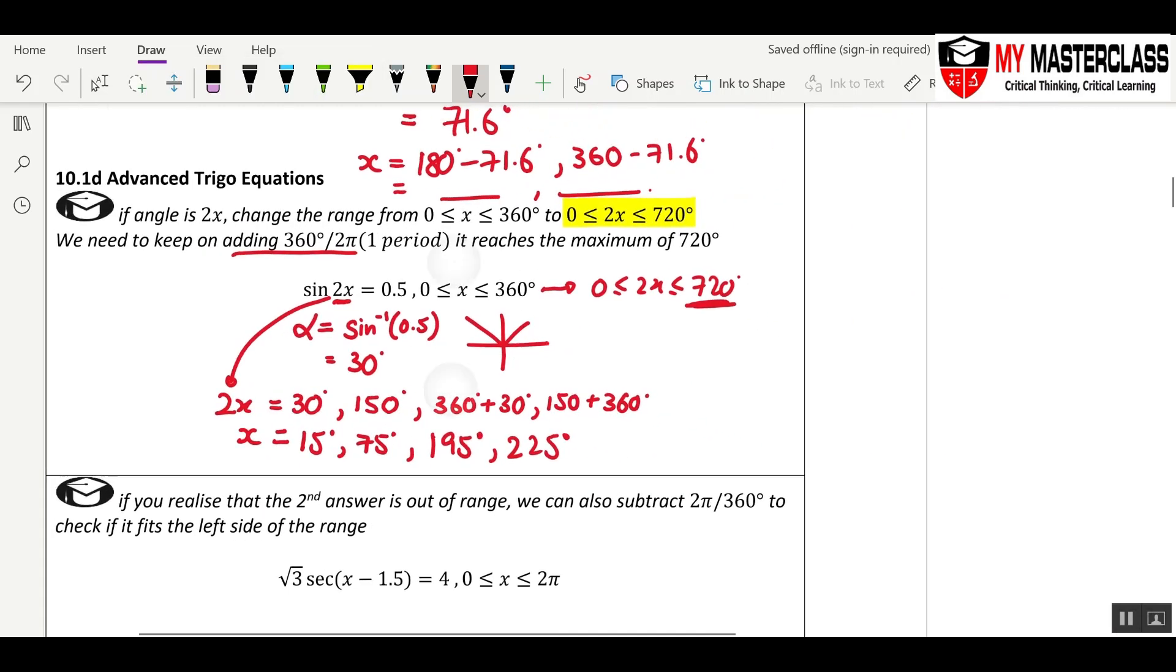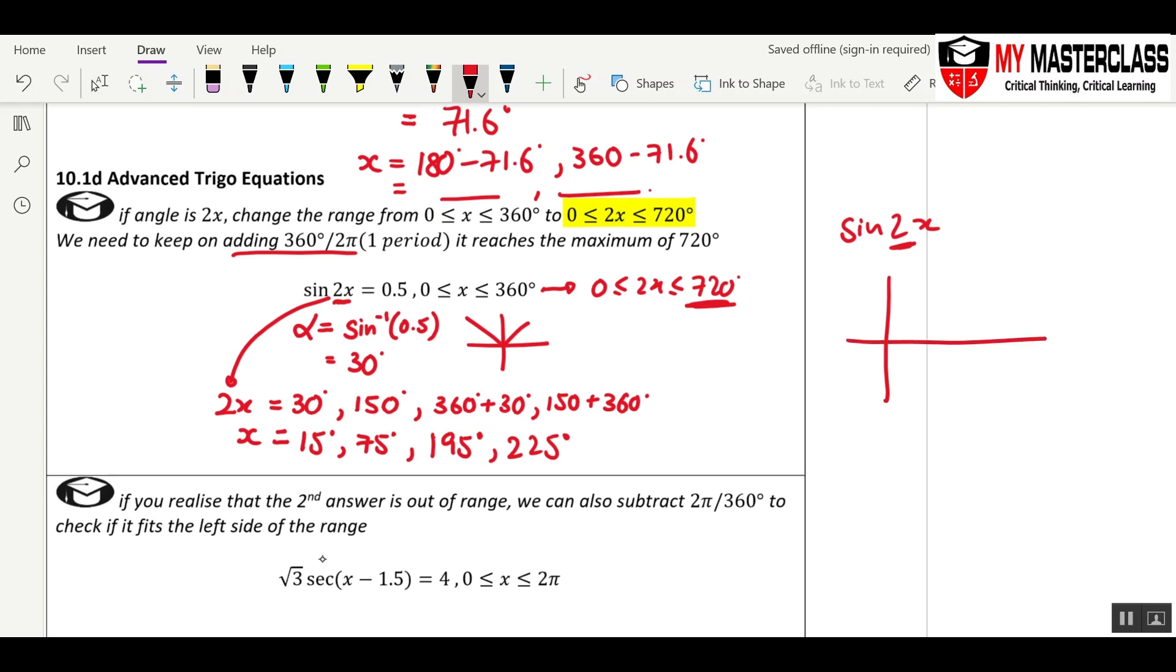If you want to understand the graphical representation, that's because when we draw sine 2x—if you know your graph very well—this means that there is going to be 2 cycles. One cycle is 180, two cycles in 360. If you draw a line here, then you will realize there's 4 solutions: 1, 2, 3, 4.